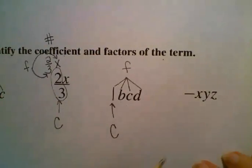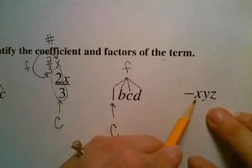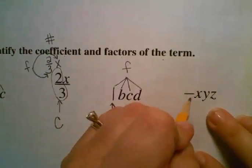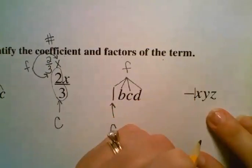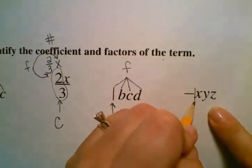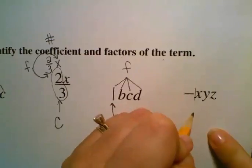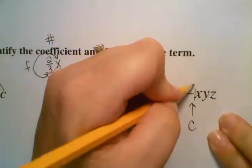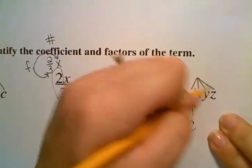Alright, we're going to use that information again. So what's the coefficient here? It would be negative 1. Since there's no number out here, we know that there's a 1. So our coefficient is negative 1. And then we have our factors.